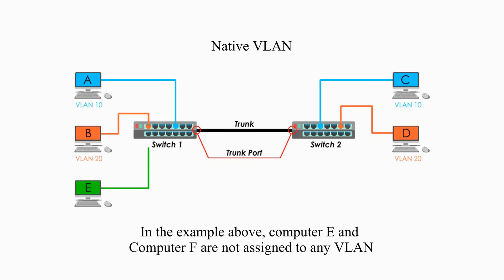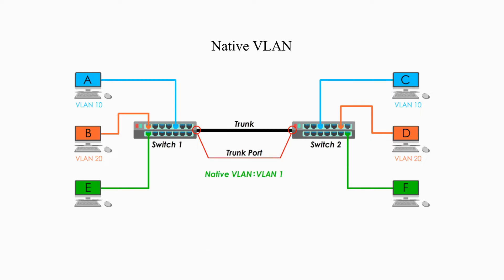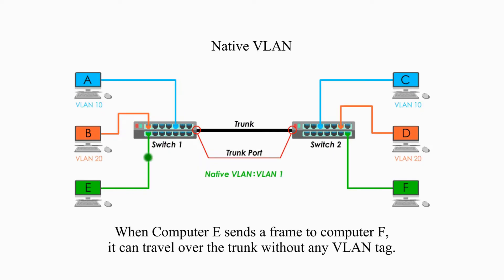In the example above, computer E and computer F are not assigned to any VLAN and thus they belong to VLAN1 by default. When computer E sends a frame to computer F, it can travel over the trunk without any VLAN tag.